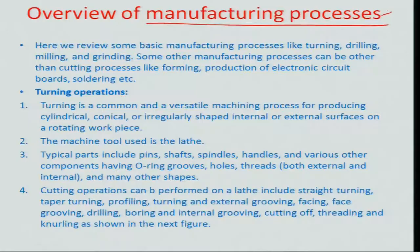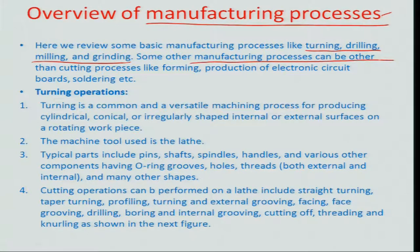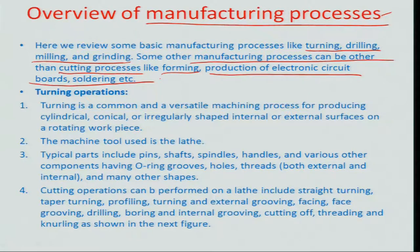Let us look at some of the manufacturing processes involved in machining. Some fundamental processes exist like turning, drilling, milling, and grinding — which most of you are aware of. There are also other processes used for different variants of manufacturing: cutting processes including sheet metal cutting, forming operations like bending and pressing of sheets, production of electronic circuits and boards, and soldering. These are secondary-level processes available in the manufacturing process domain.